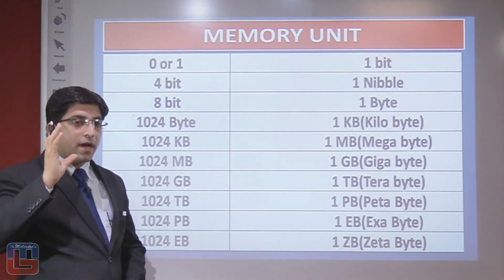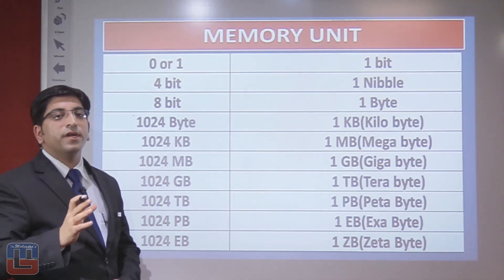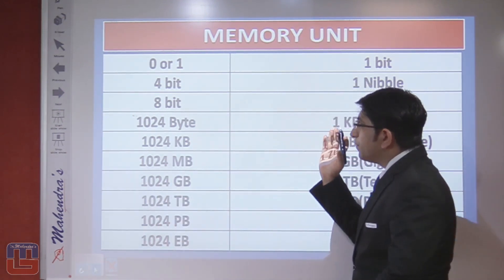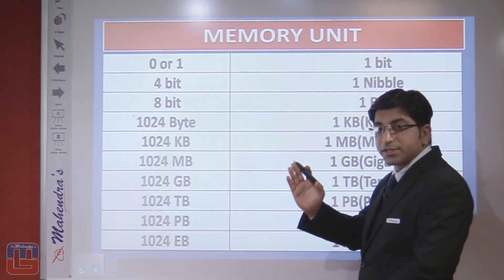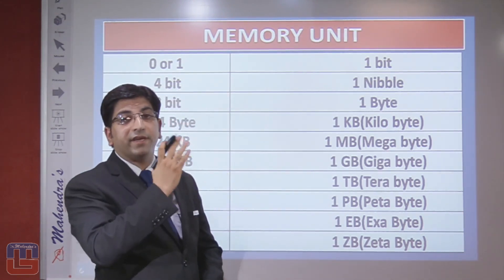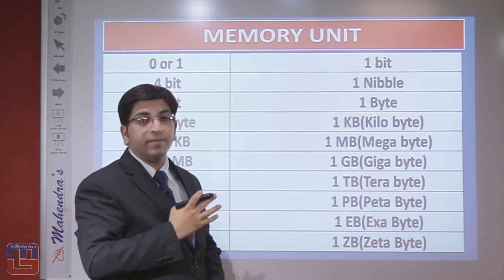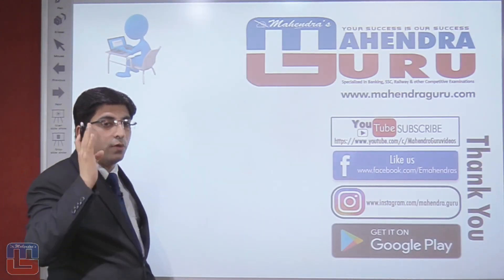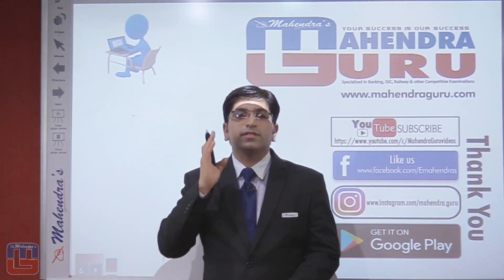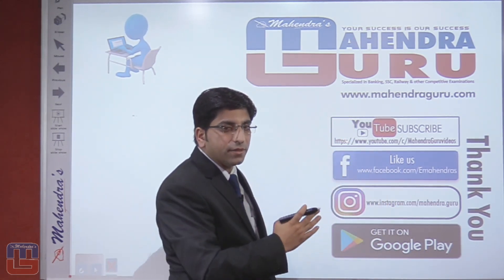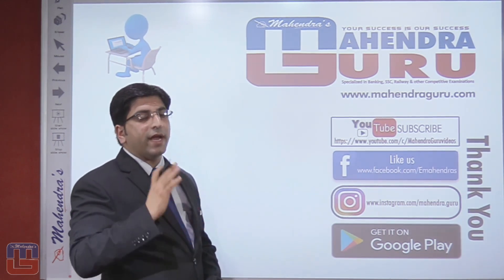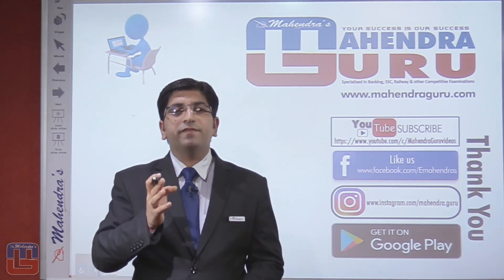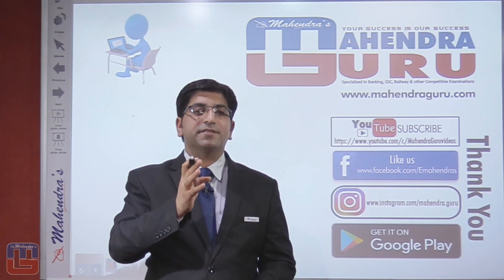To summarize the memory unit sequence from smallest to largest: bit, nibble, byte, KB (kilobyte), MB (megabyte), GB (gigabyte), TB (terabyte), PB (petabyte), EB (exabyte), and ZB (zettabyte). Save this sequence and recall it regularly. If you liked this video, subscribe to our YouTube channel, like us on Facebook, follow us on Instagram, and check out the MG app on Mahindra Guru. Thank you!